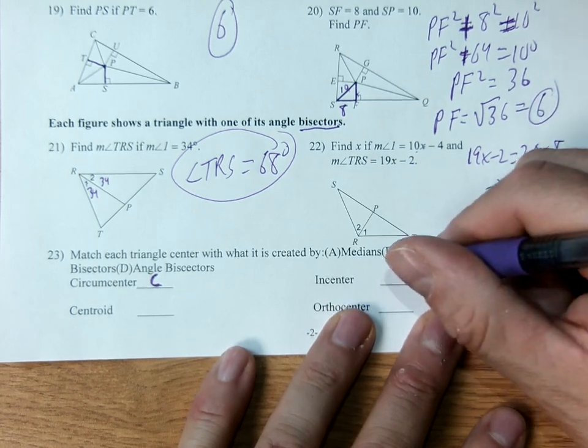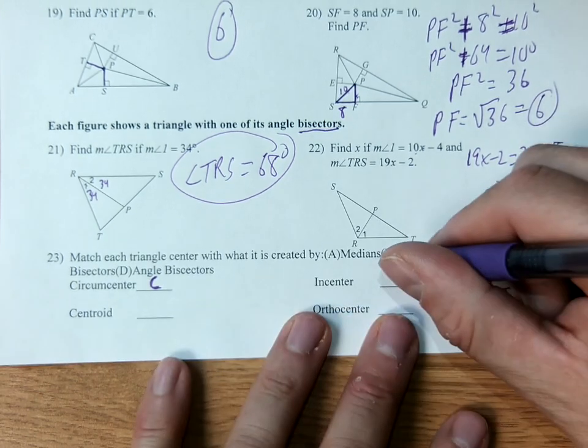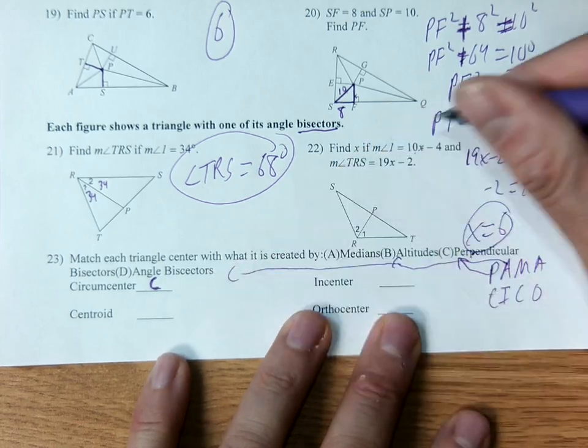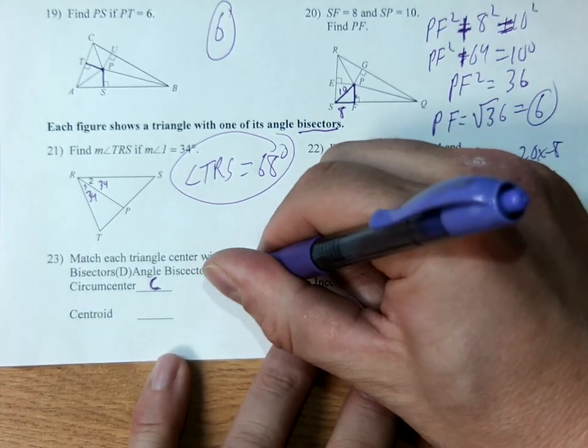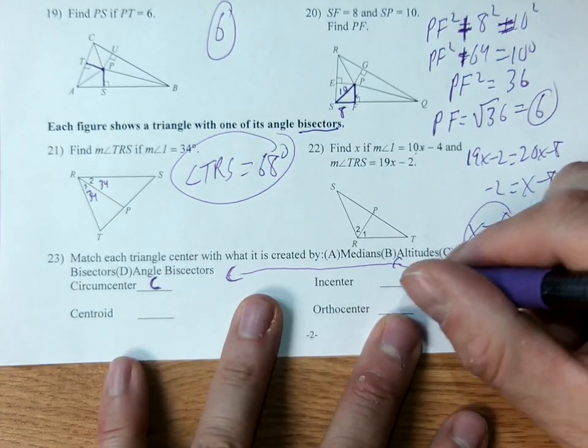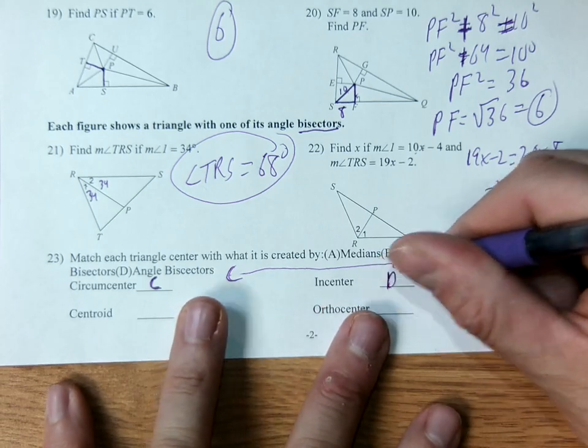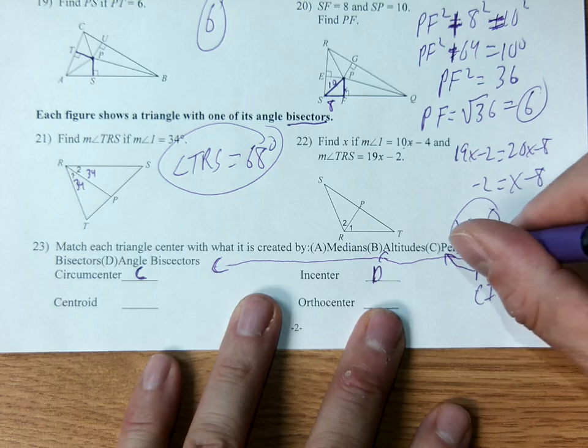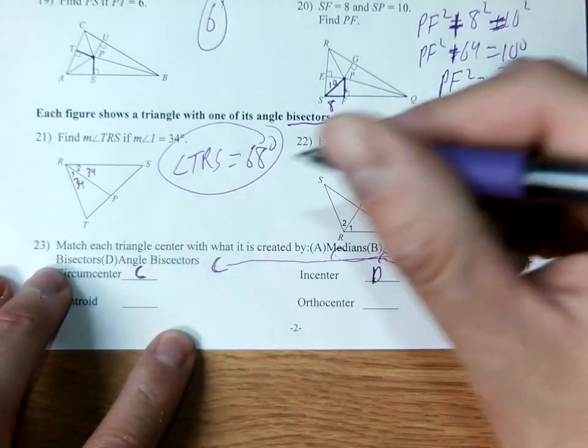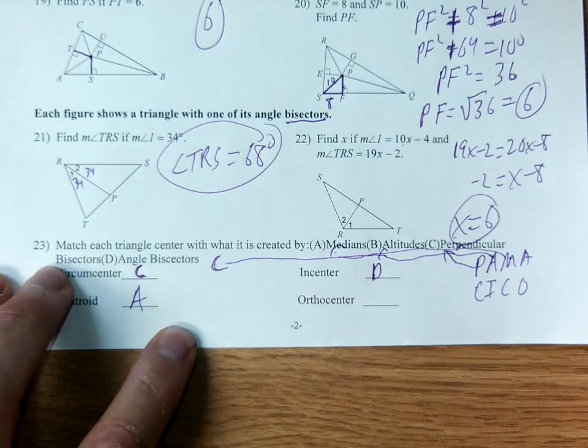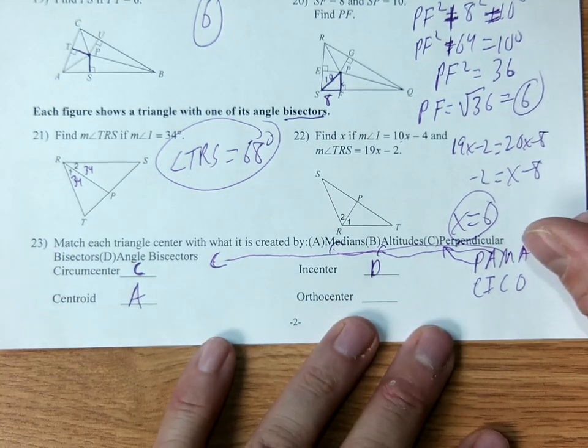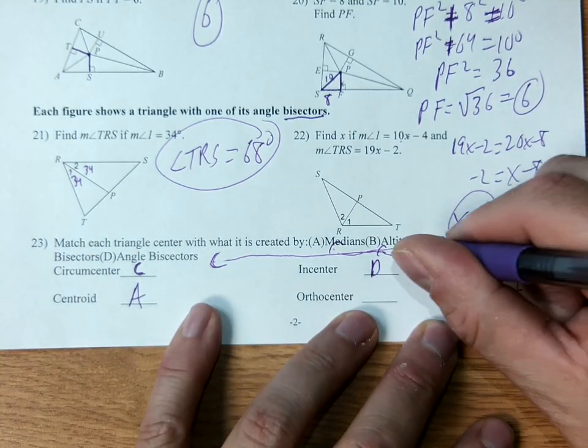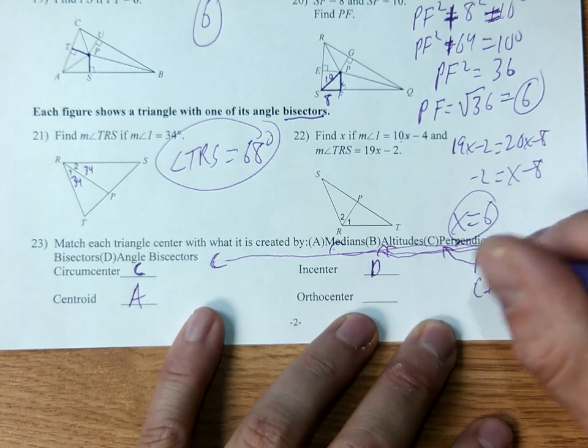It goes with circumcenter. So this is option C. Perpendicular bisectors make circumcenter. A stands for angle bisector. And it goes with incenter. M stands for medians. It goes with centroid. And the other A stands for altitudes. And it goes with orthocenter.